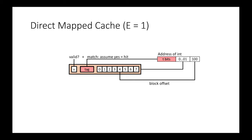Assuming the data being requested is an integer of 4 bytes, we read using the block offset. In this case, the block offset is 100 in binary, which is 4 in decimal. In the case of a cache miss, the cache line is evicted and replaced with the new line from the lower-level memory hierarchy.